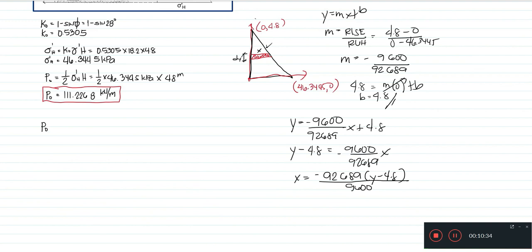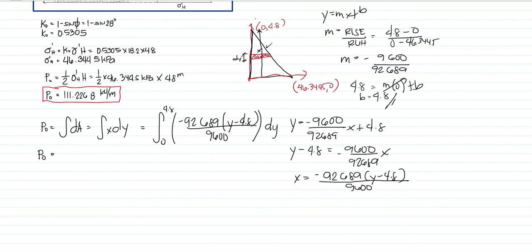So we have to use P sub O is equal to the integral of dA whereas the integral of dA is x dy. So that is equal to the integral of negative 92,689 times y minus 4.8 divided by 9,600 times dy. So that has a limiting value of 0 to 4.8 because from this 0, we'll shrink the differential strip until 4.8. So our value P sub O using our calculator will be equivalent to, so now that is also equal to 111.2268. So this is in kilonewton per meter.